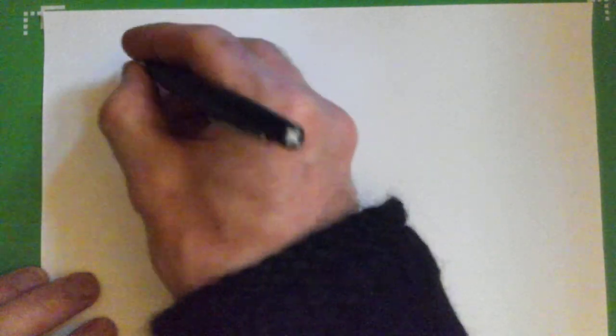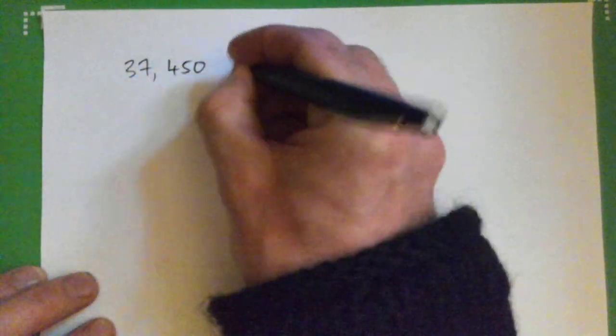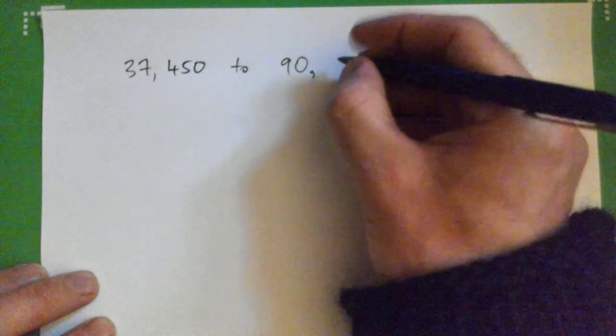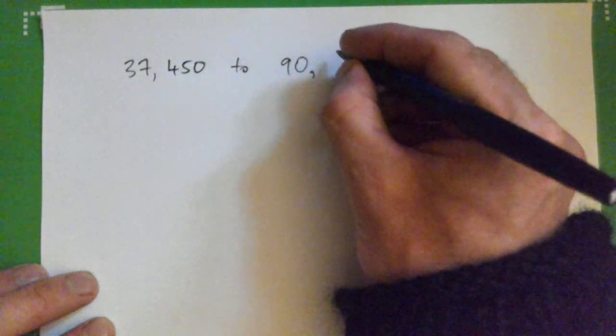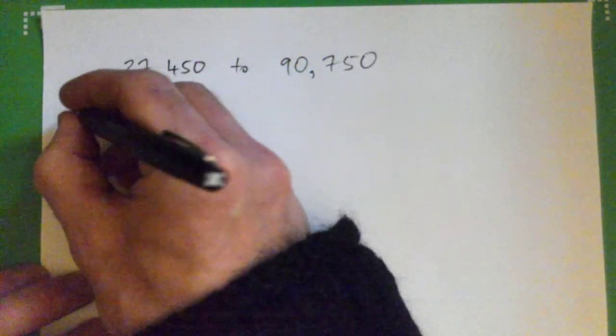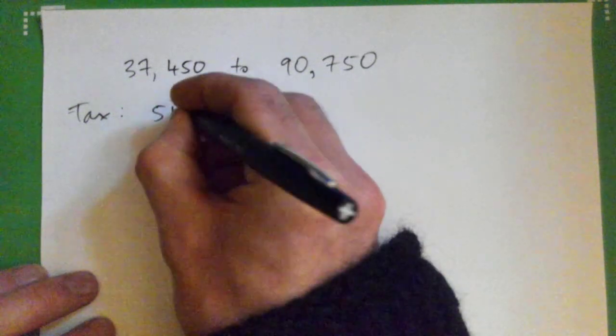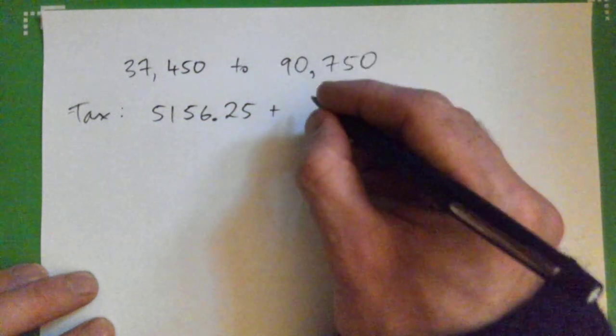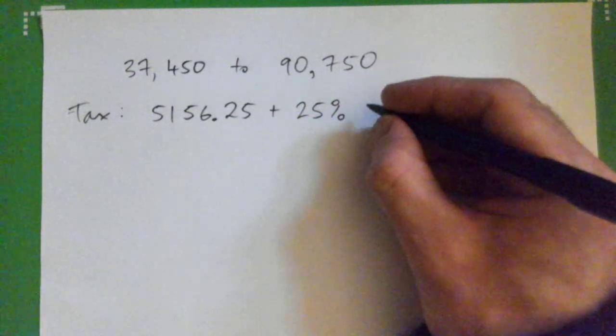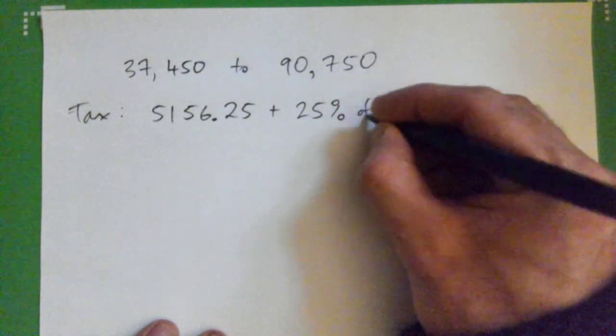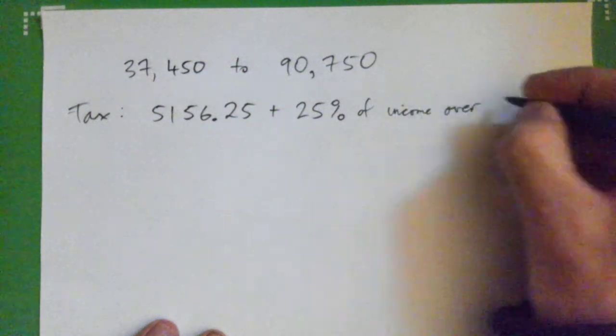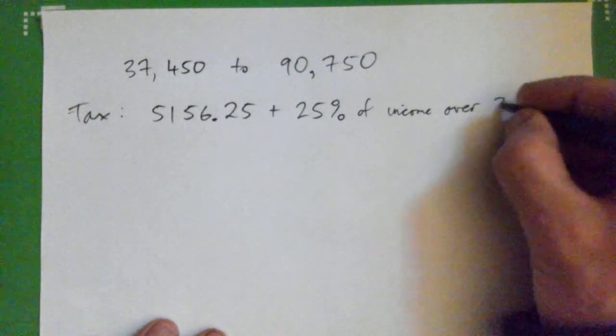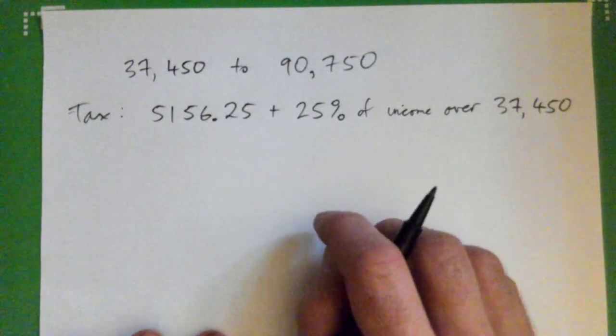Okay, so we've got taxable income between $37,450 to $90,750. Then your tax is going to be $5,156.25 plus 25% of whatever your taxable income is over $37,450.